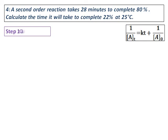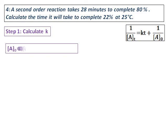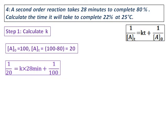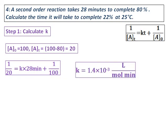For step 1, we calculate k. Assuming the initial concentration A₀ is 100, since the reaction is 80% complete, the concentration at t equals 100 minus 80, which is 20. So at time 28 minutes, concentration of A is 20. Substituting into the second-order rate law equation, we get k as 1.4 × 10⁻³ L·mol⁻¹·min⁻¹.